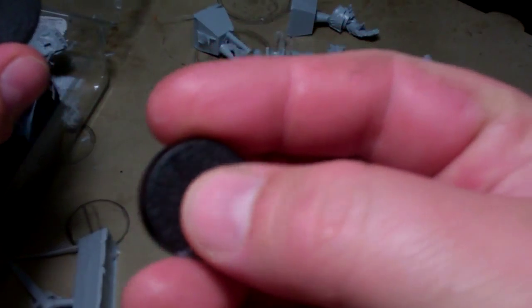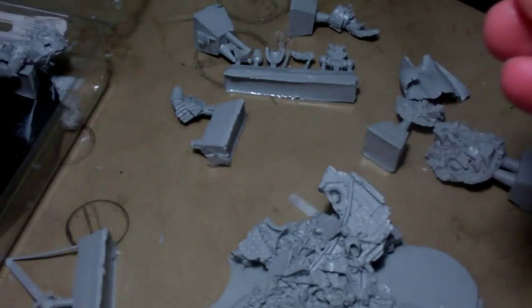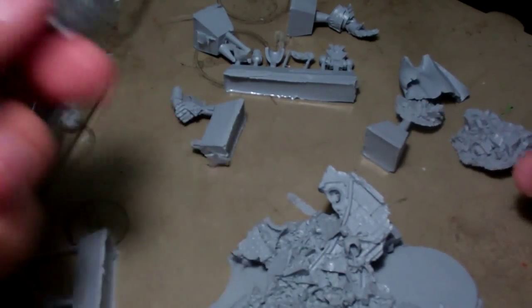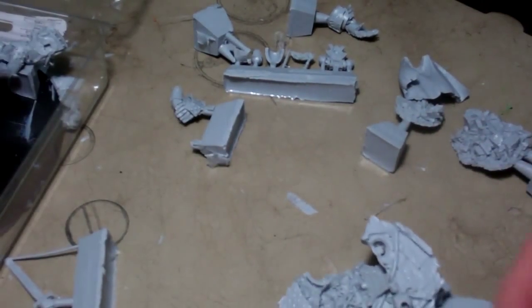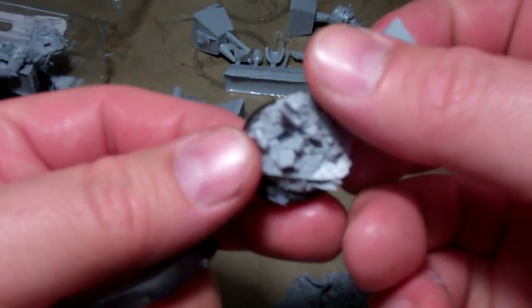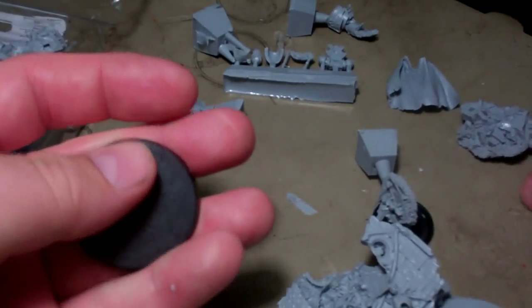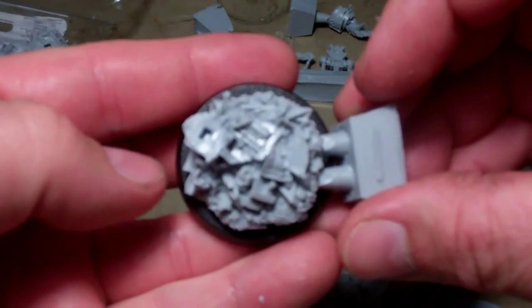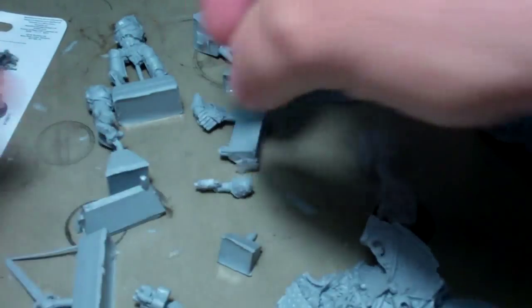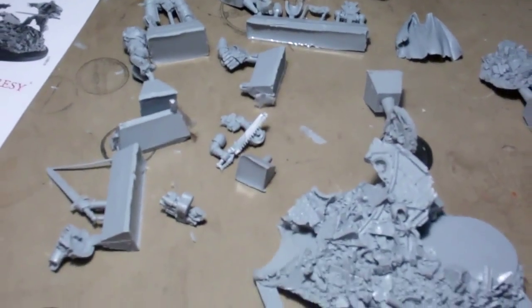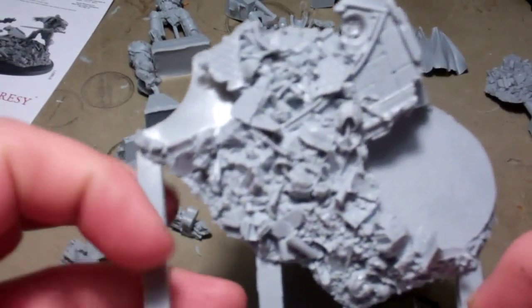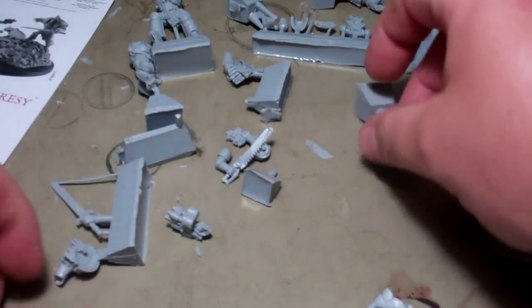You can see there's quite a few pieces. You get Loken's base that the decorative piece is just going to fit onto. You're going to get Abaddon's base that his decorative part is going to fit onto. And you get the large base here.